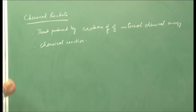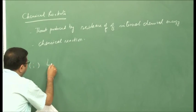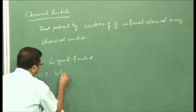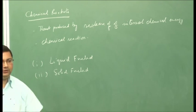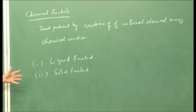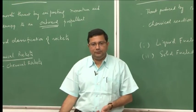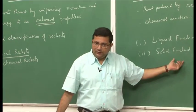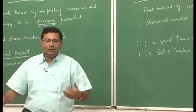Chemical rockets have two primary sub-categories — sometimes three — but primarily liquid fuel and solid fuel, where the names depict the phase of the propellant. In liquid fuel rockets, both oxidizer and fuel are in the liquid phase. Sometimes we have a mono-propellant, which can be in liquid or solid phase. In solid phase, we can have oxidizer and fuel blended together as one rod or separately.